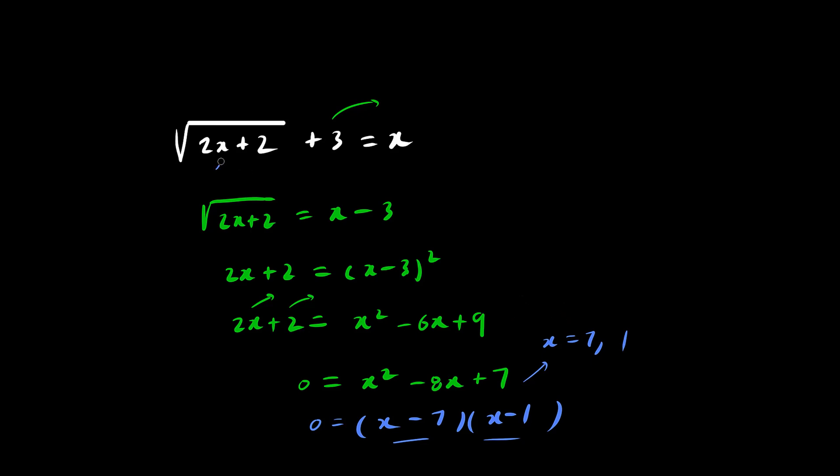When we plug in 7, we get 14 plus 2. So the left side would be the square root of 16, which is 4. But there's also a plus 3 here. So 4 plus 3 would be 7. And the right side is also 7. So we're going to say this is the correct root, the correct solution.